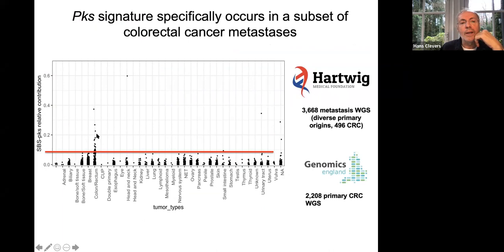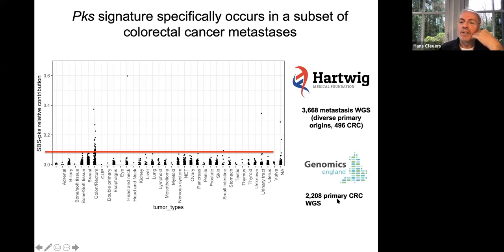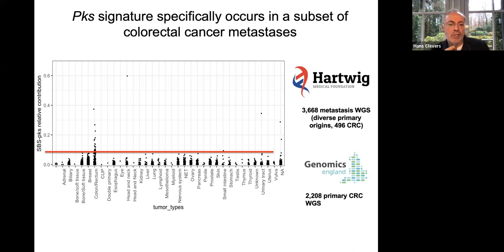We occasionally see cases of head and neck cancer and bladder cancer, where E. coli can also live. We then turned to another large colorectal cancer cohort from Genomics England, with the same observations. There appears to be a higher rate of this mutational signature on the left side of the colon compared to the right side. Overall, we now think about 12 to 14 percent of colon cancer patients show clear signatures of pks+ E. coli in their cancers.